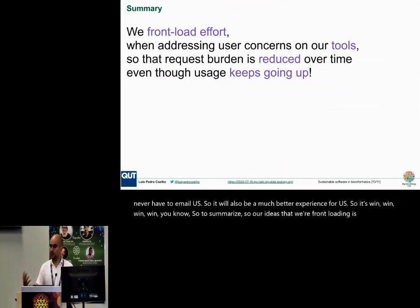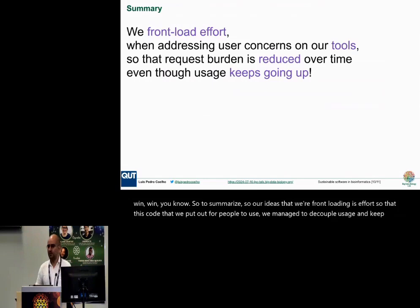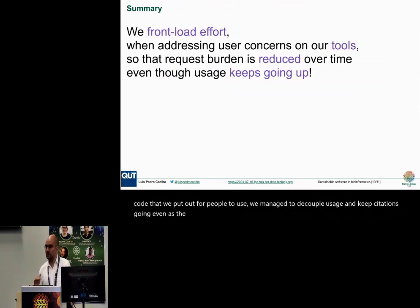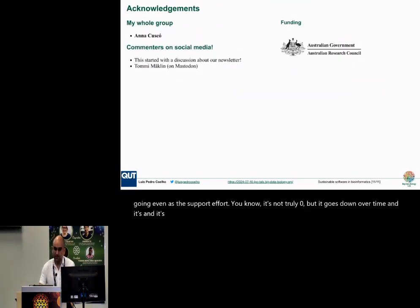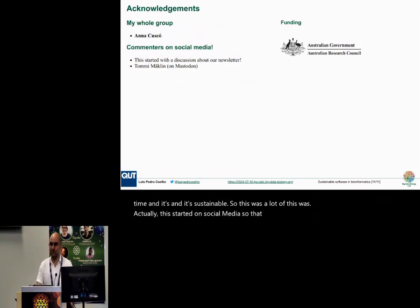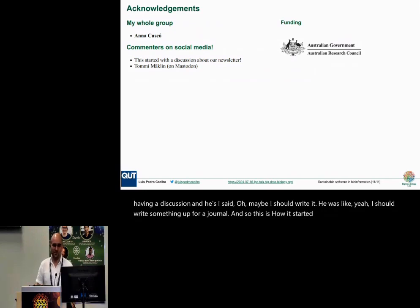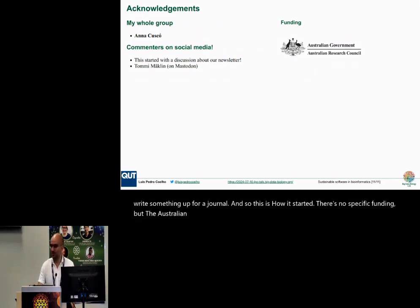To summarize: our idea is that we front-load the effort so that the code we put out for people to use decouples usage — keeping citations going even as the support effort goes down over time — making it sustainable. A lot of this started on social media; Tommy Macklin on Mastodon suggested I write something up for a journal, and that's how it started. There's no specific funding, but the Australian Research Council funds me — thanks to them, and thank you.